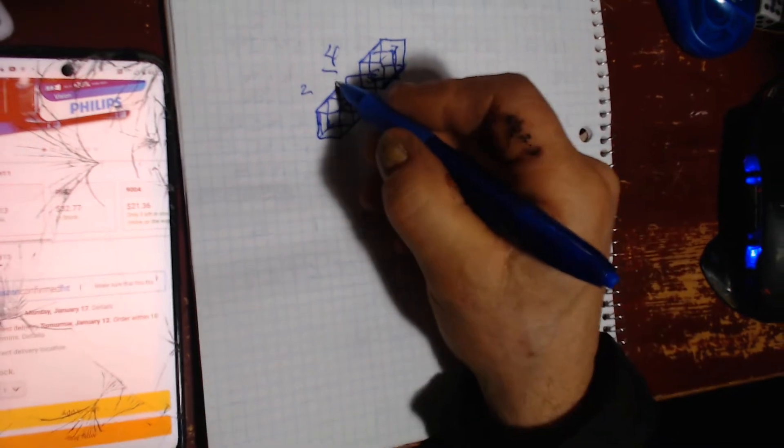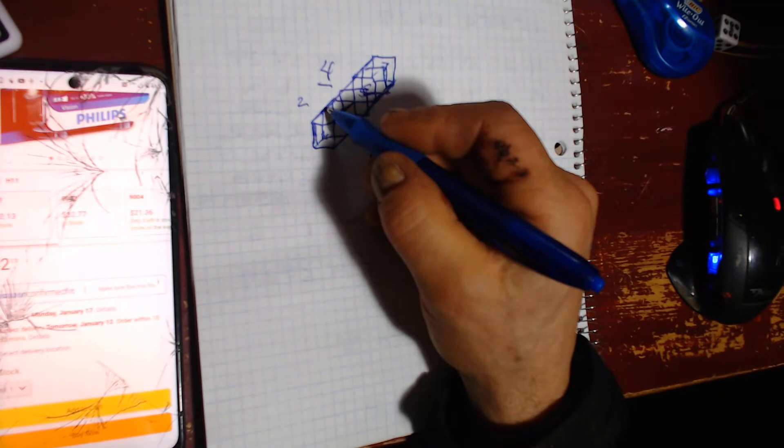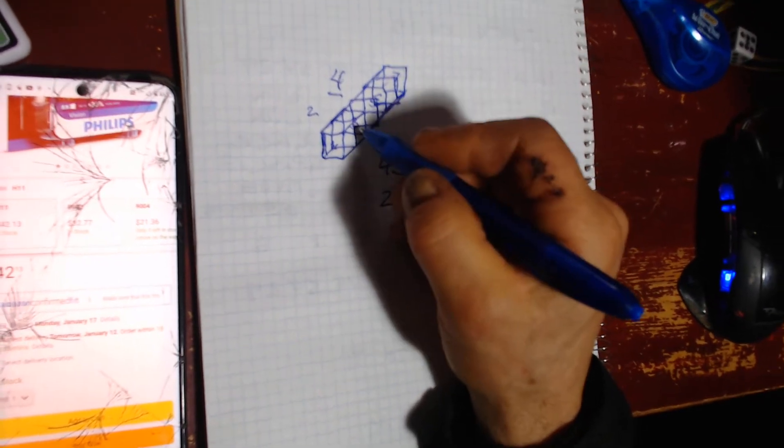And after that, well, now we're going to get the whole thing there. Now we got the full hexagon. So we're going to have three, one here, one here, and then one here.